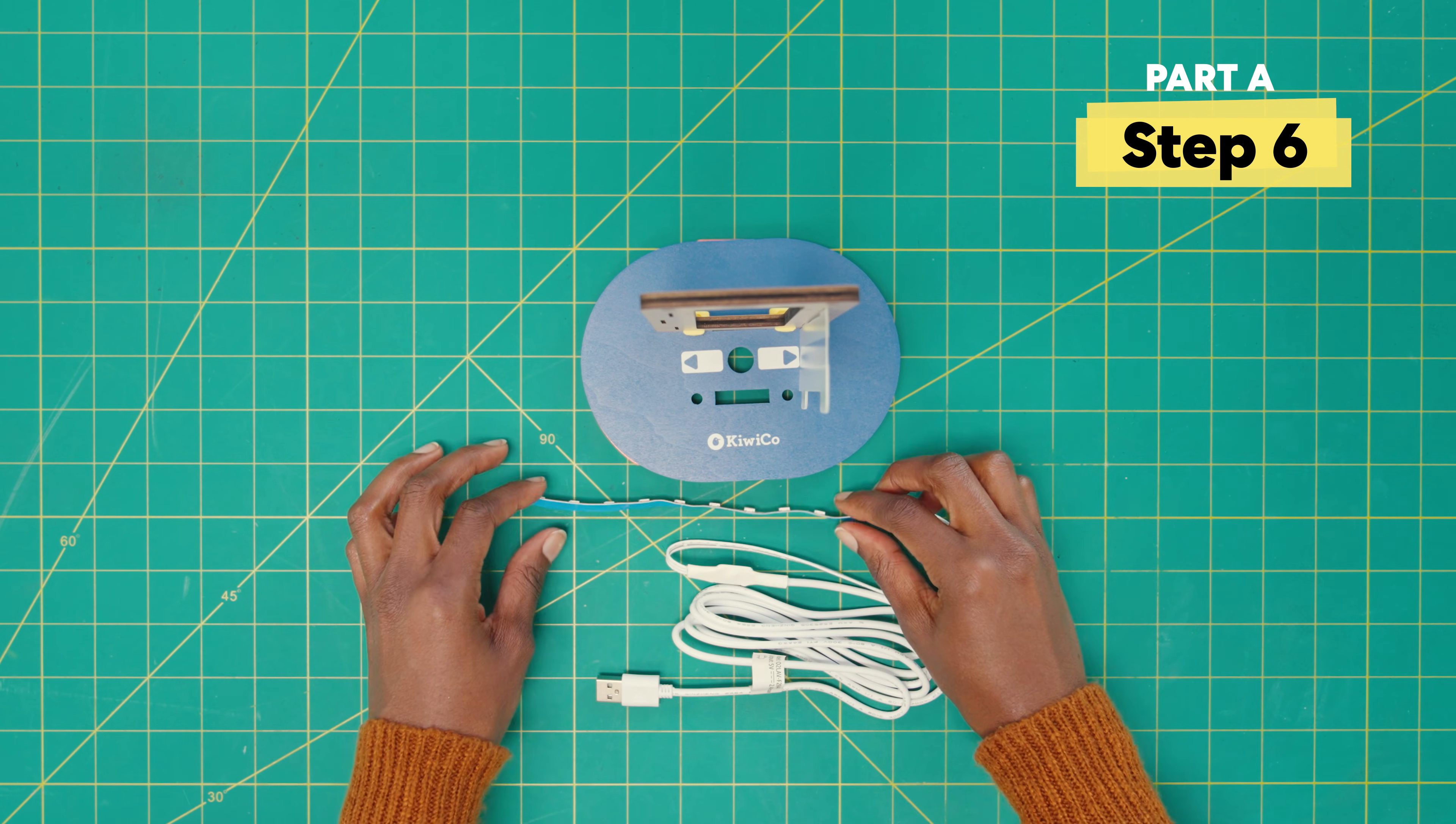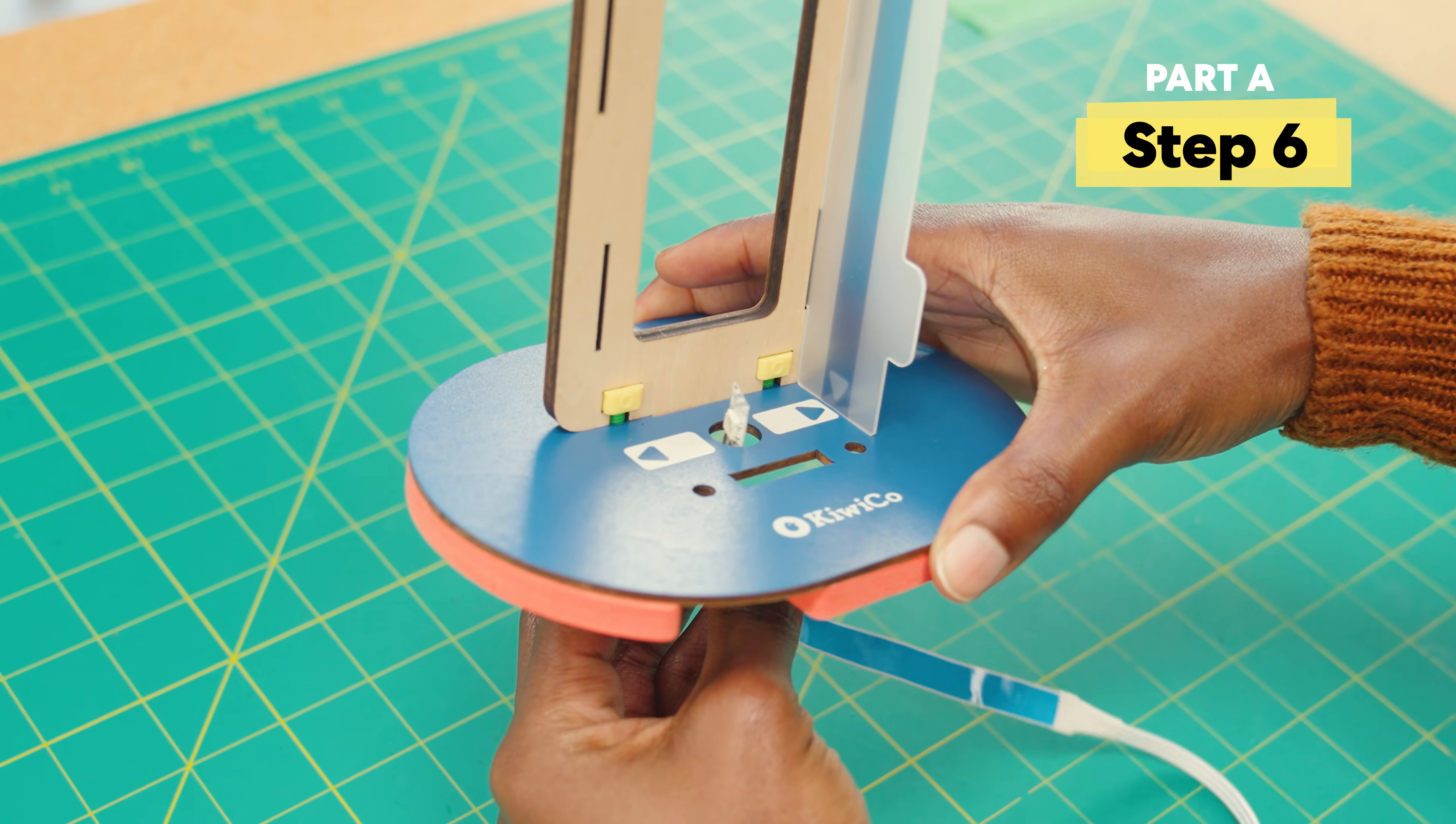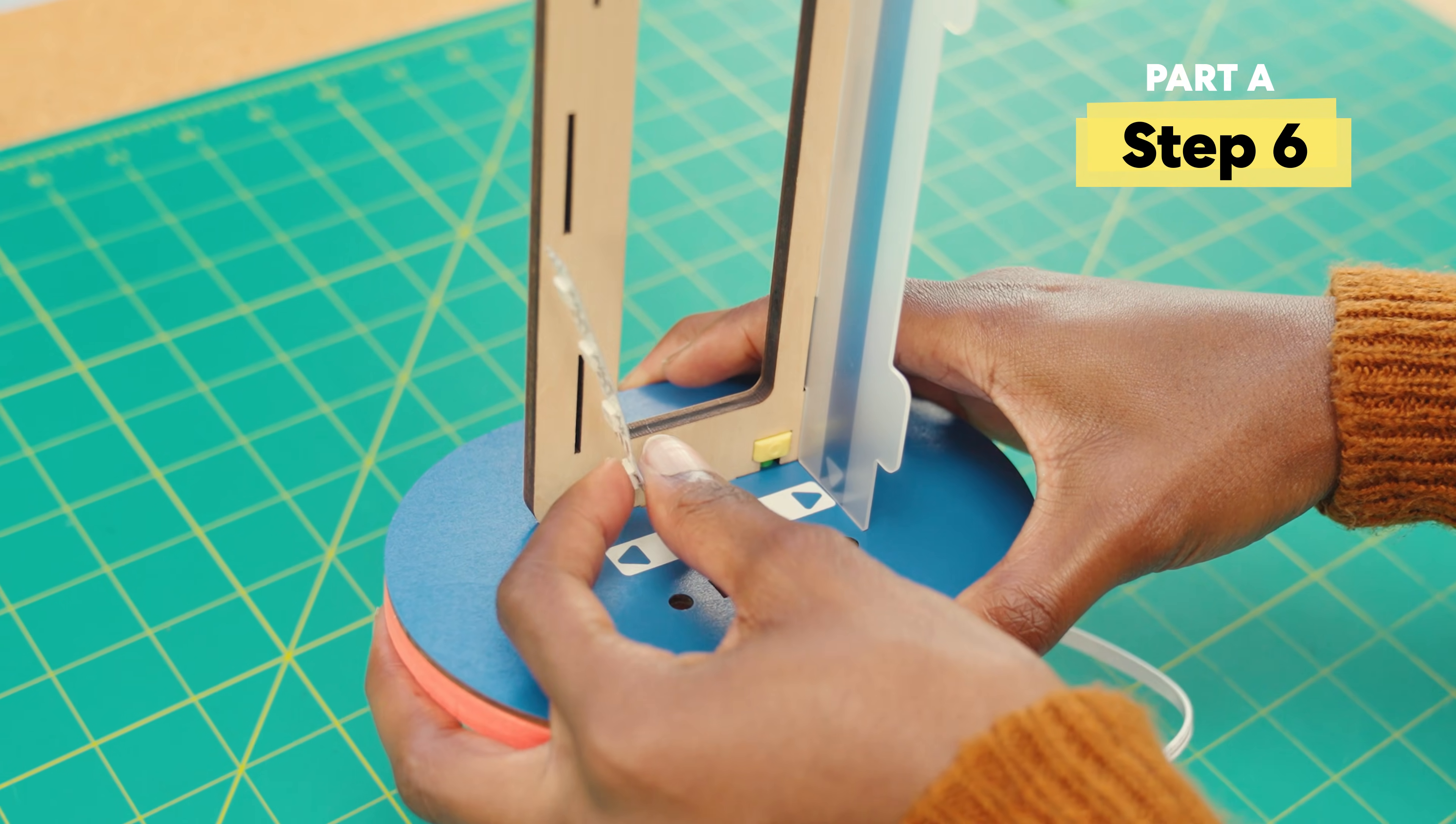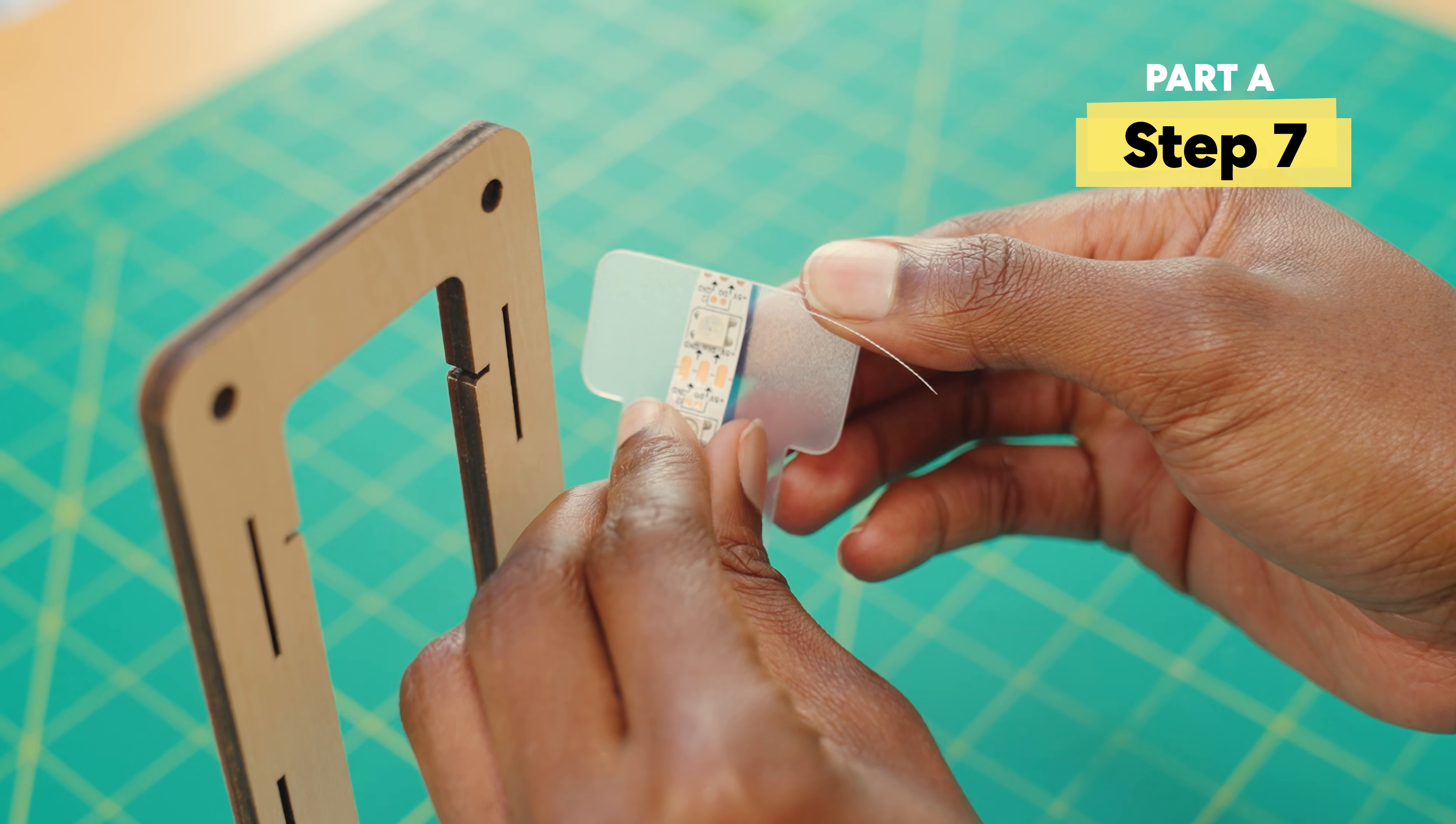Next, grab the light and thread it through the bottom. Pull just the light strip through. Now, peel off this part of the light strip and stick on here.